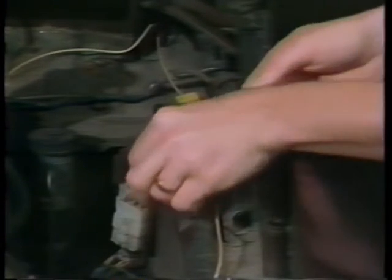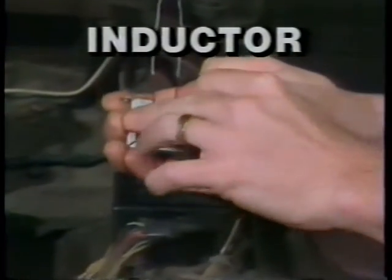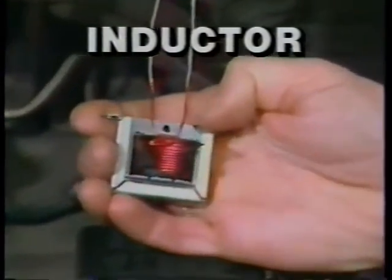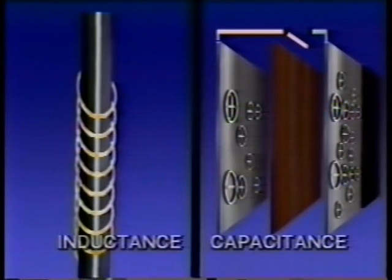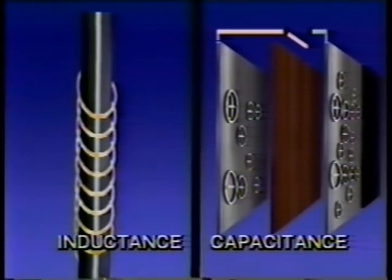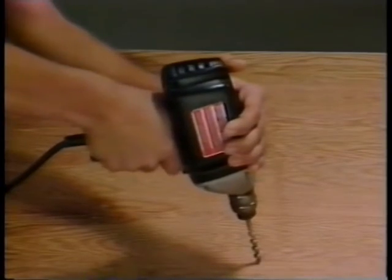Inductors are most useful as filters in areas where current may fluctuate. This one smooths out the current for a car radio. These two devices are methods of temporarily storing electrical energy: it can be stored on the plates of a capacitor, where the charge is separated and has the potential to recombine, or as the potential energy of a magnetic field in an inductor. This is why electricity is such a valuable form of energy — it can change into many different forms so we can store it, move it around, and use it to do work in a variety of jobs.